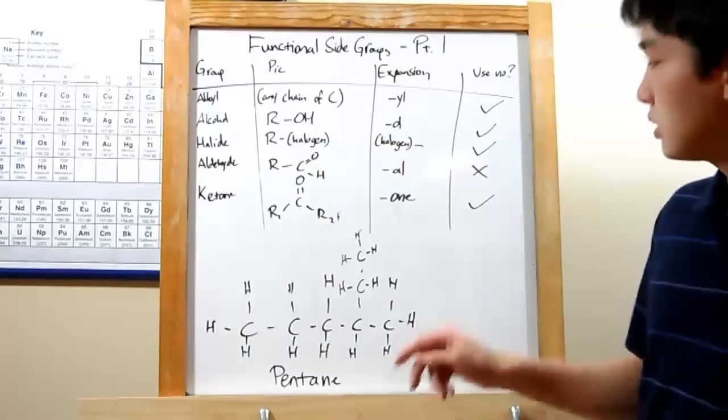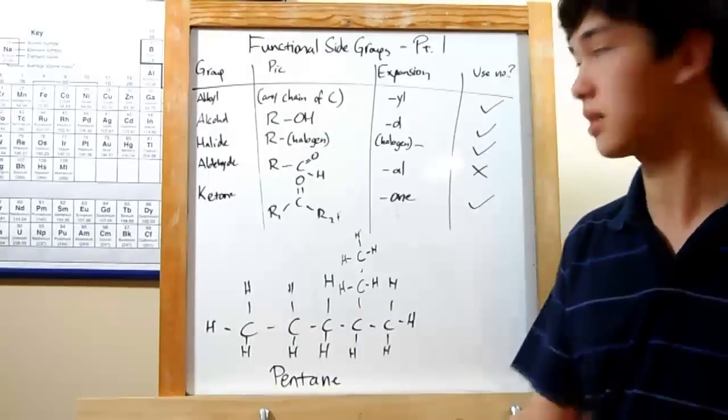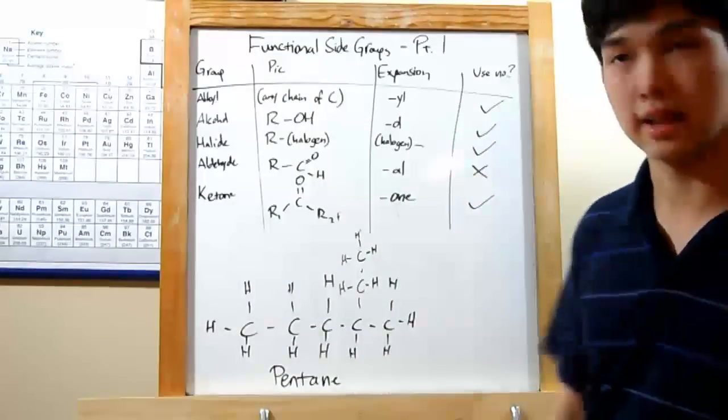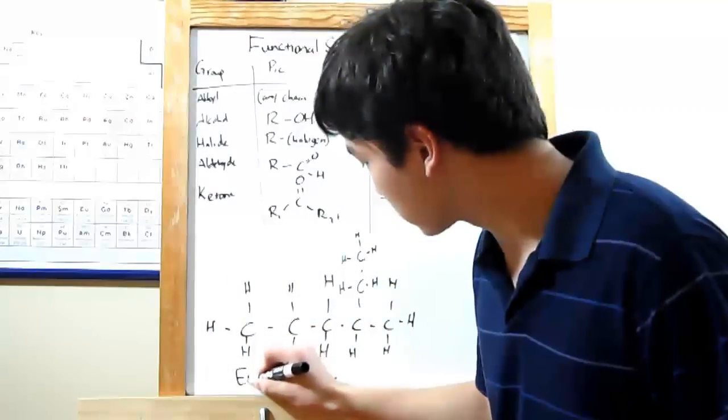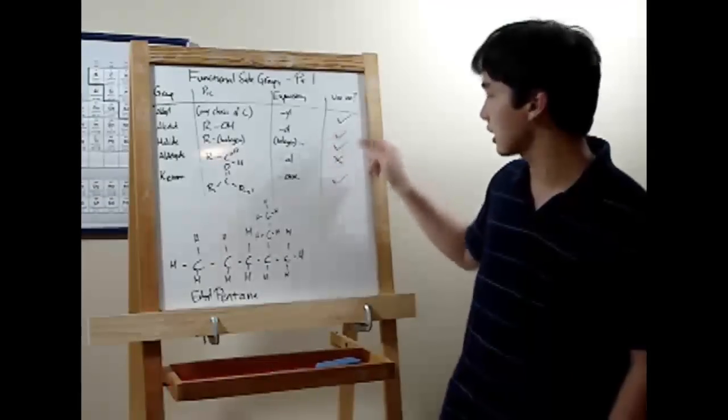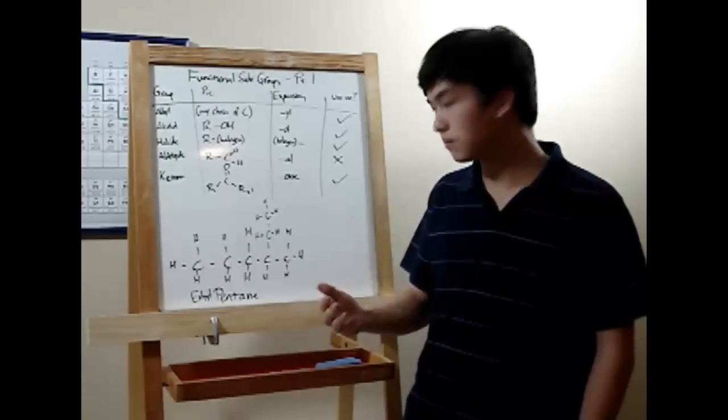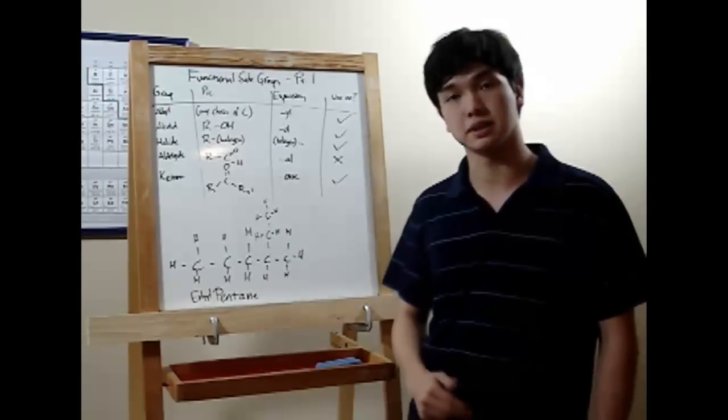To name your alkyl group, use a Greek prefix based on number of carbons. If there are two carbons in this one, so eth, then add yl to the end of that, so ethyl. Put that in front of your main chain's name, calling this ethyl pentane. Now, there's one more thing. I've put a check here in the use number column.